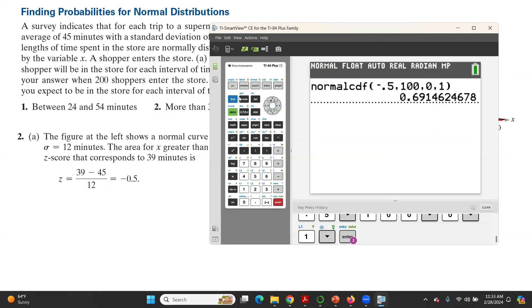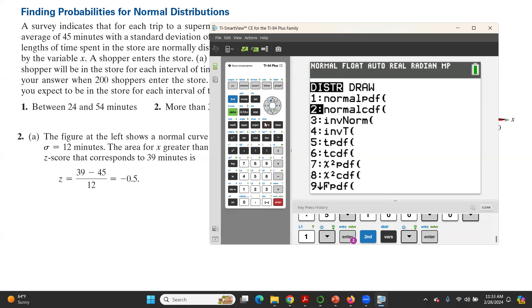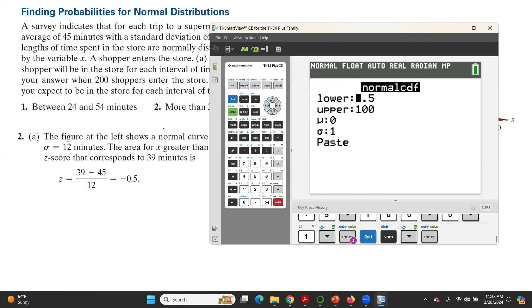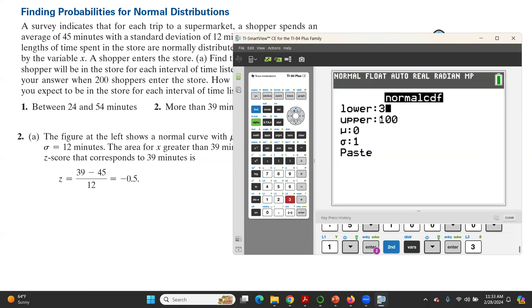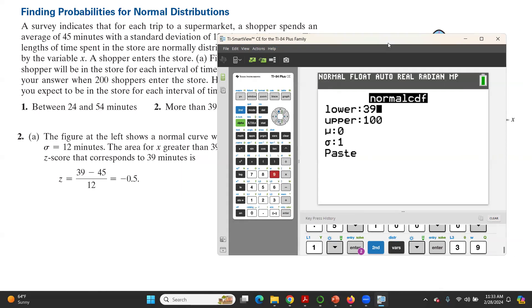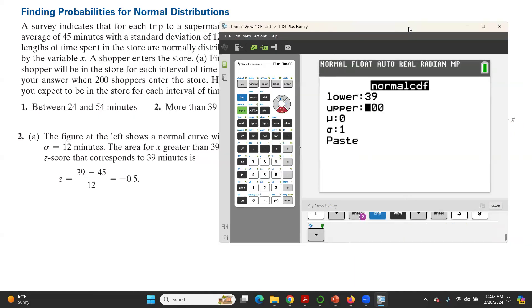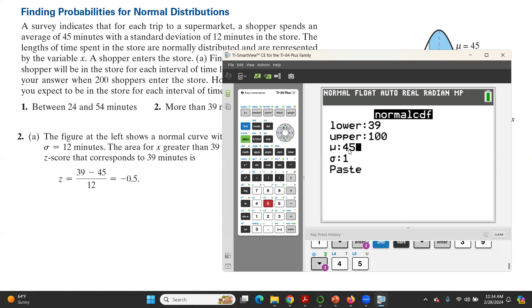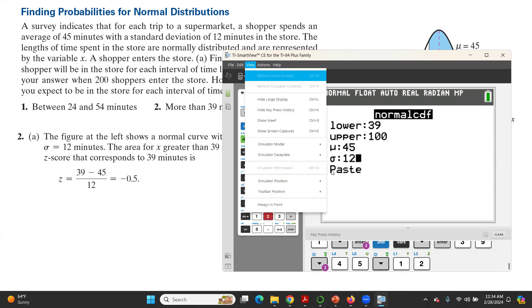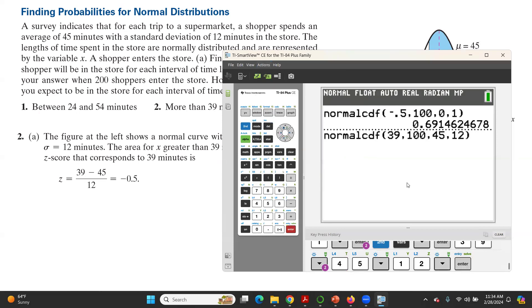Again, if you decide to use x, go to second DISTR, normalcdf. The lower bound is going to be 39 minutes. The upper bound can be 100 or a larger number. It doesn't matter. The mean is 45 minutes, so we're going to change this to 45. Standard deviation is 12 minutes, so 12, and then go to paste.